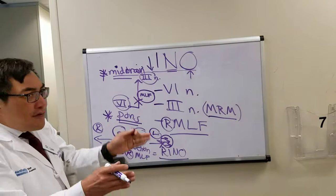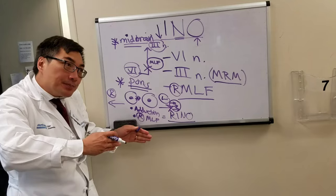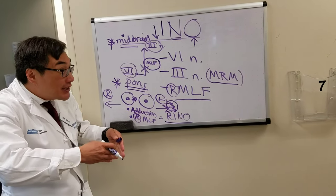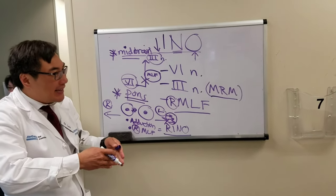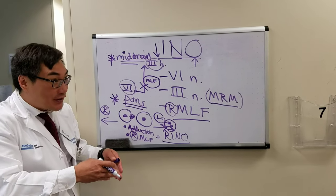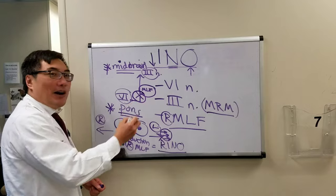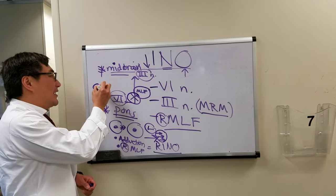So if someone has an INO and they cannot adduct the right eye, but they can converge, that means we can make the three fire. And that means if they can converge, that the lesion is probably in the pons. And that is caudal.